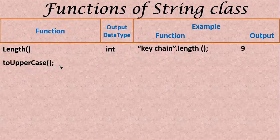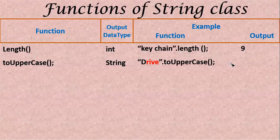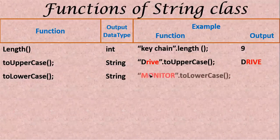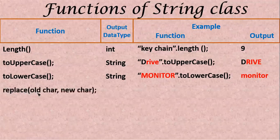Next, toUpperCase() — the output data type will be String. For example, "drive" dot toUpperCase() — D is already capital, r-i-v-e are in small letters, so those are converted to uppercase. The output will be DRIVE in all capital letters. Next, toLowerCase() — the output type is also String. For example, "MONITOR" dot toLowerCase() will give monitor in lowercase.